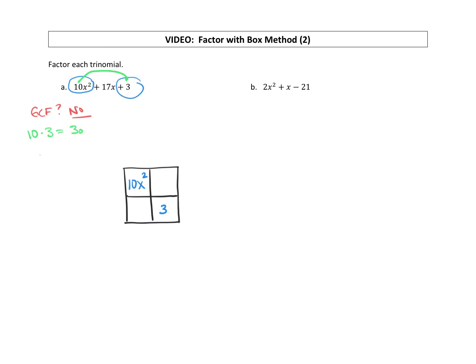Now what we want are factors of 30 that will add up to this middle term of 17. So if you think through your factors of 30, we have 1 and 30, 2 and 15, 3 and 10, 6 and 5.